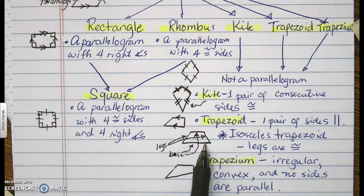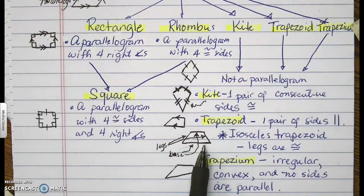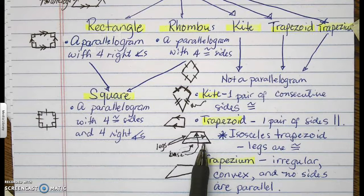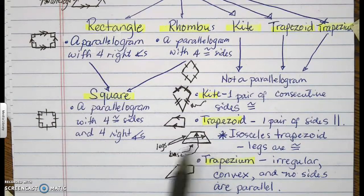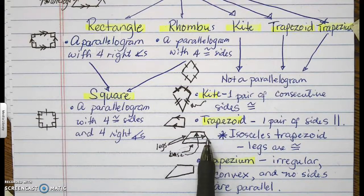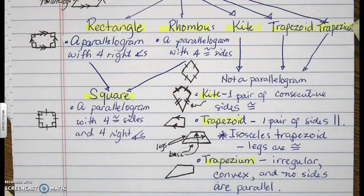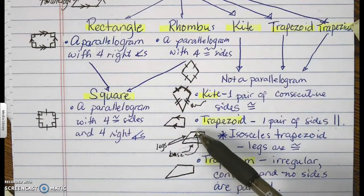Now, what is an isosceles trapezoid? An isosceles trapezoid is a trapezoid with the legs being congruent. These are the legs right here. The non-parallel sides are the legs. The parallel sides are called bases.